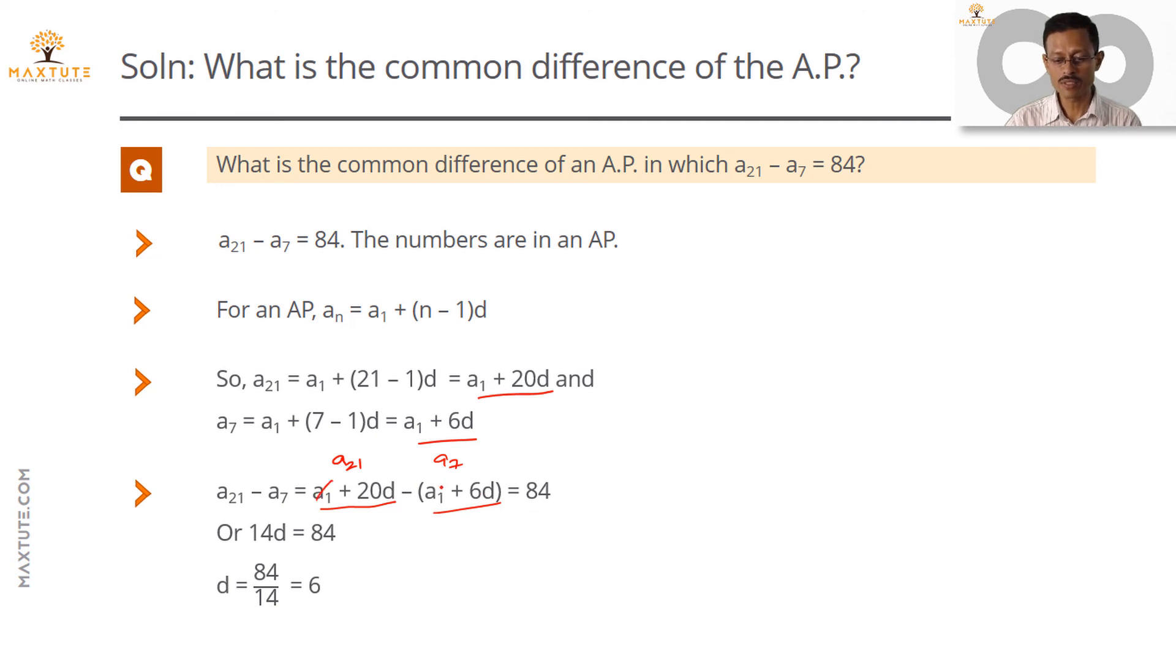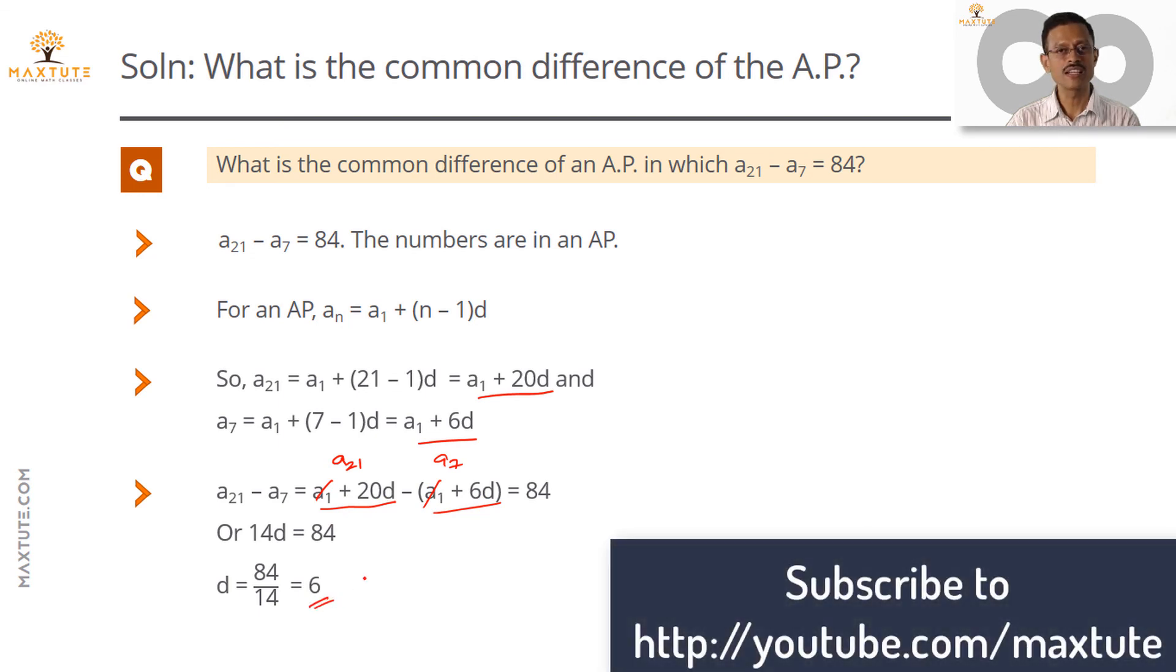So cancel the two A1s. 20d minus 6d is 14d, which is equal to 84, or d is equal to 6. A very simple question that you should definitely get right.